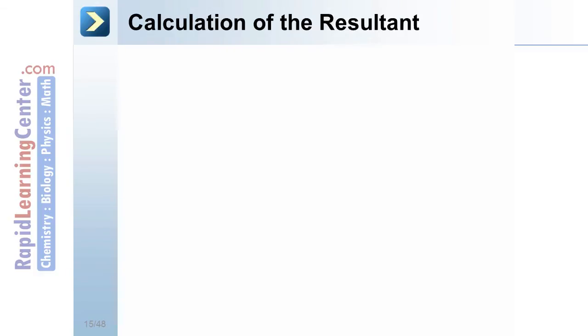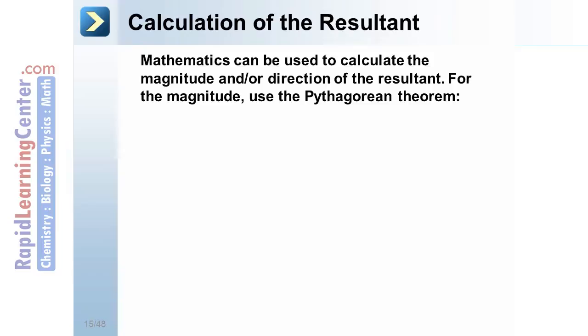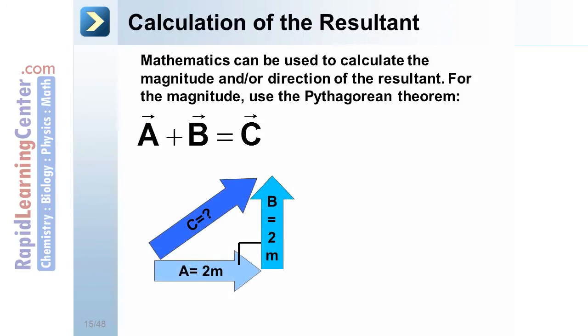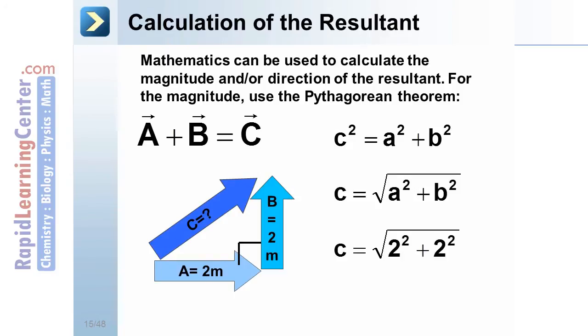Calculation of the resultant. Mathematics can be used to calculate the magnitude and or direction of the resultant. For magnitude, use the Pythagorean theorem: C squared equals a squared plus b squared. This can also be written as c equals the square root of a squared plus b squared. In our example, the resultant has a magnitude of 2.83.